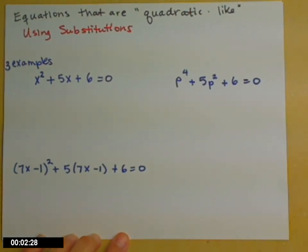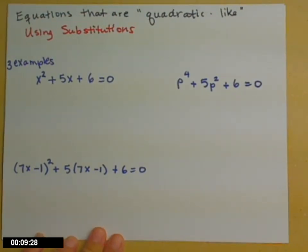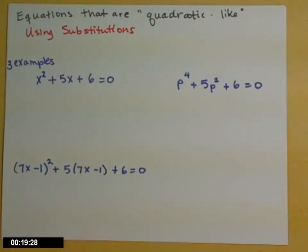This is a topic that can be especially challenging for students: solving equations that are quadratic-like. We're going to do these using substitutions. I started off with an example that's actually a quadratic equation. Notice the highest power of x is 2 — x squared — and it's already set equal to 0. I've been especially nice in giving you one that factors.